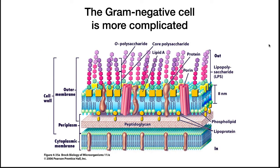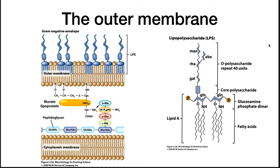The gram-negative cell wall structure is more complex. It has a thin layer of peptidoglycan, and outside of this is the second lipid bilayer, the outer membrane. There are several unique features of the outer membrane. The outer membrane is anchored to the peptidoglycan by a lipoprotein, which is covalently bound to a crossbridge that also links to the outer membrane. Another feature of the outer membrane is lipopolysaccharide.